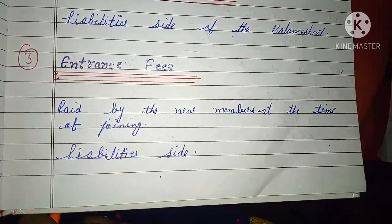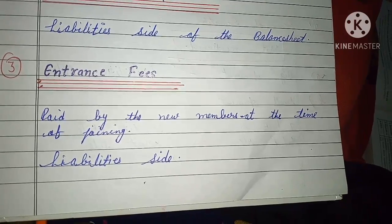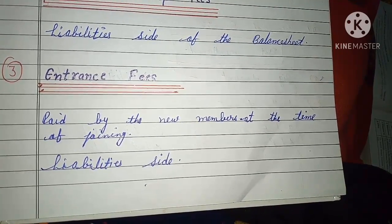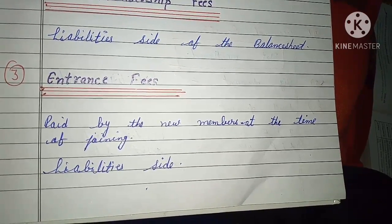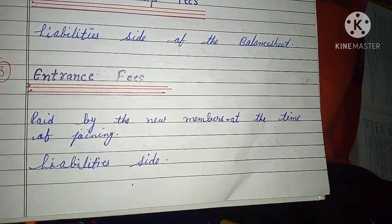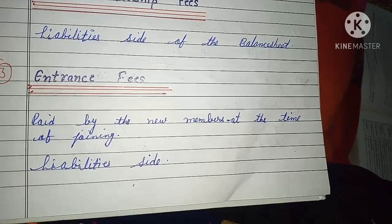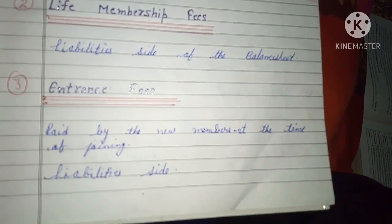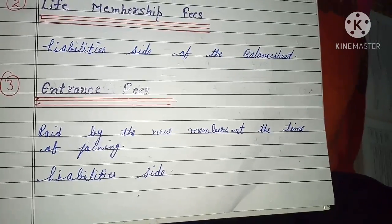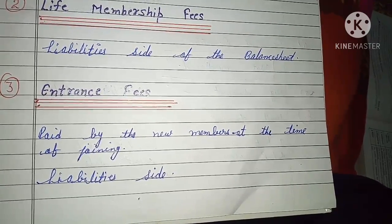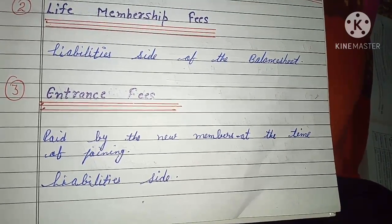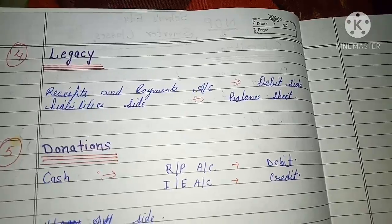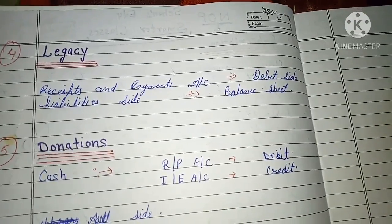Entrance fees are paid by new members at the time of joining. When you have any new member in an organization, they pay entry fees. These entrance fees are recorded in the income and expenditure account. The next point is legacy.